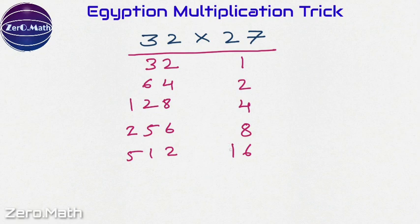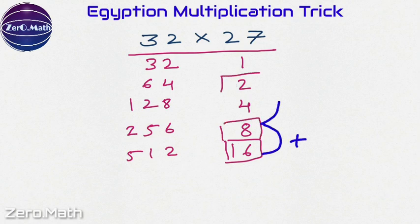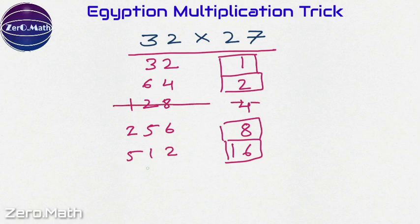Now let's identify the numbers below 27 in such a way that the sum will be 27. So it's 16 plus 8 is 24, plus 2 is 26, and plus 1 is 27. Hence the sum of 32, 64, 256, and 512 is going to be our answer. We will not consider 128 because it is not in front of the square bracket.